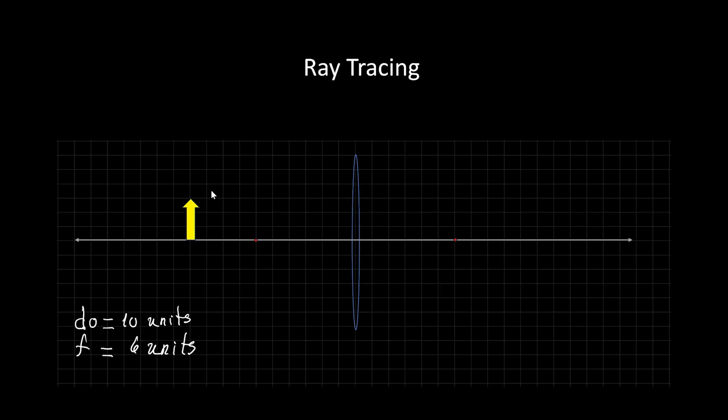So usually objects are drawn as arrows like this. Here is the lens. We have to definitely have the optical axis, the two focal points right here. And here I put the object at 10 units. Units are not important right now, but let's just make sure that they're all in the same units. And the focal length is six units. So the object is clearly outside the focal point.